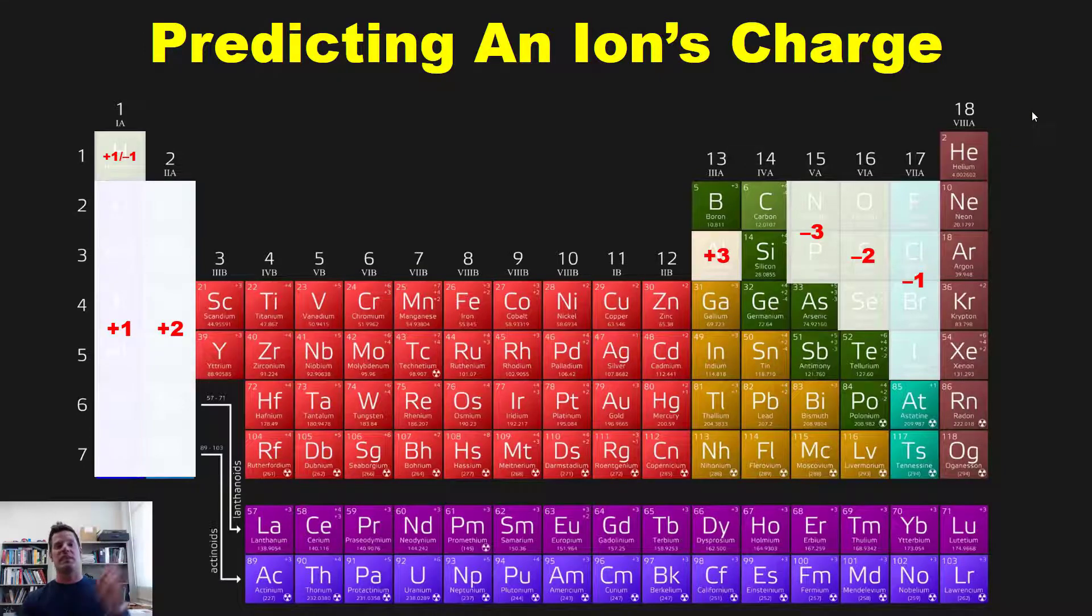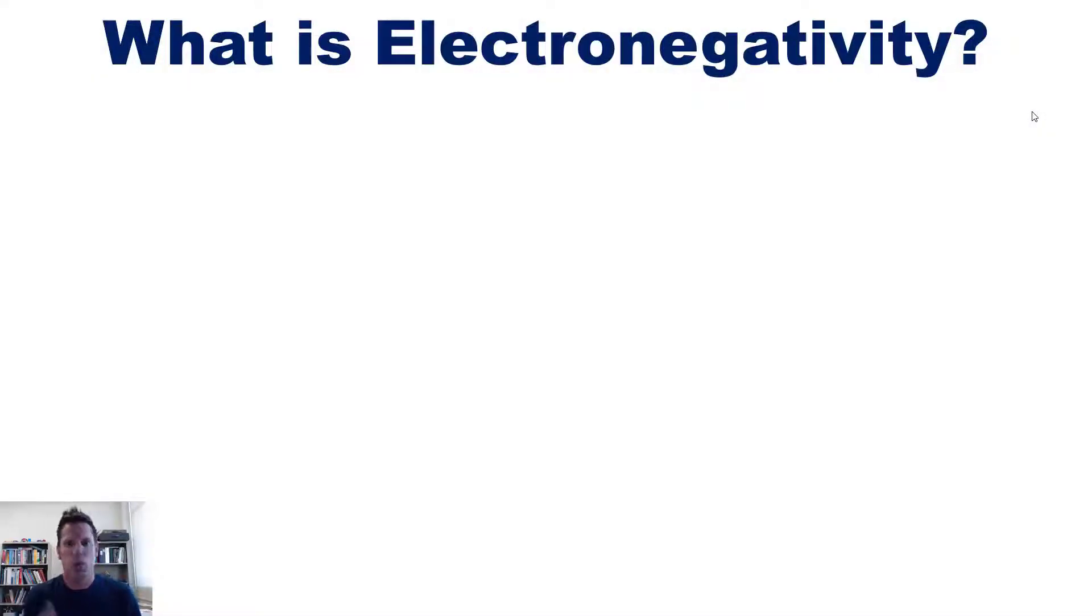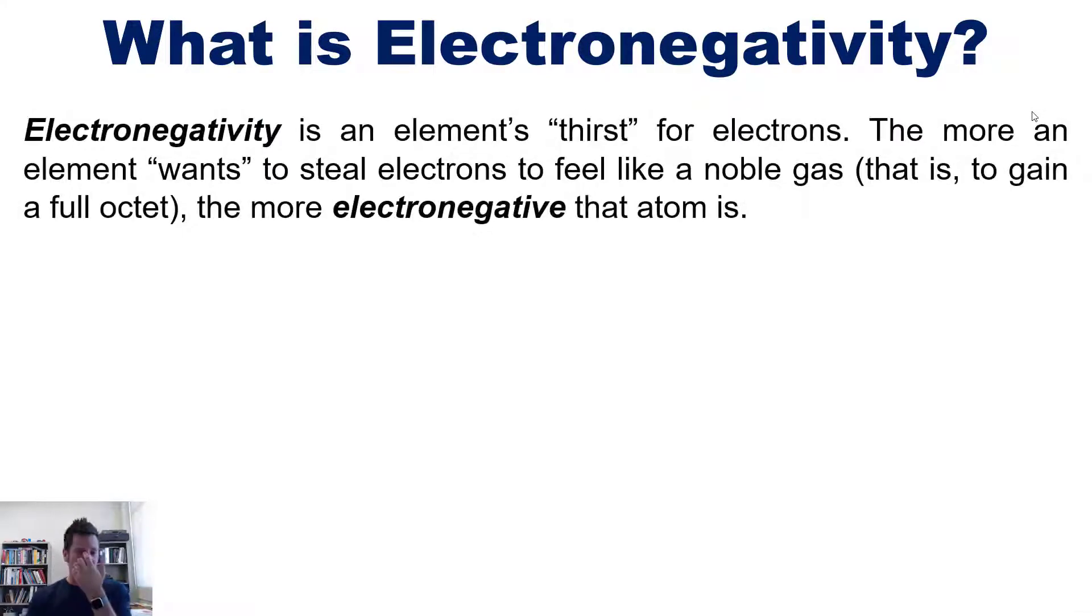We end then with this concept, electronegativity. So what is electronegativity? Well, electronegativity is an element's thirst for electrons. The more an element wants to steal electrons to feel like a noble gas, that is to gain a full octet, the more electronegative that atom is.